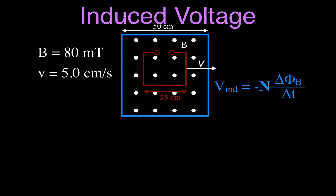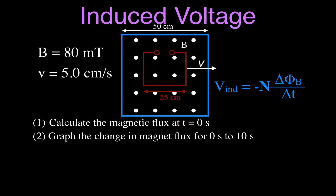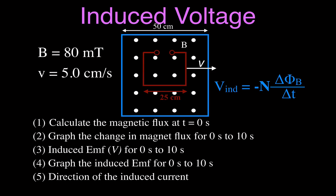This is the equation we're going to use to calculate the induced voltage — this is Faraday's Law. It means that a voltage will be induced in the coil when the magnetic flux through the coil changes over time. Not when there is just a magnetic flux, but the amount of magnetic field inside the coil has to change over time. This symbol is for the magnetic flux, this is over time, and N is the number of windings in the coil. We're going to answer five questions: calculate the magnetic flux at time zero, graph the change in magnetic flux, calculate the induced EMF, graph that, and then determine using Lenz's law the direction of the induced current as the coil moves out of the magnetic field.